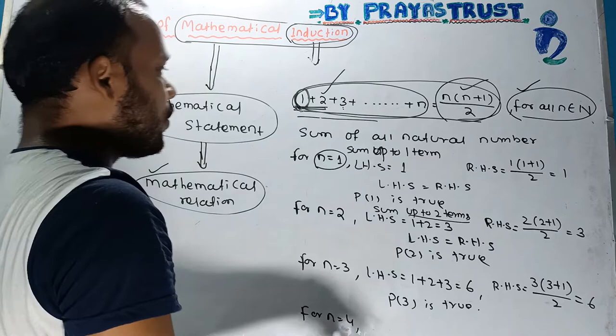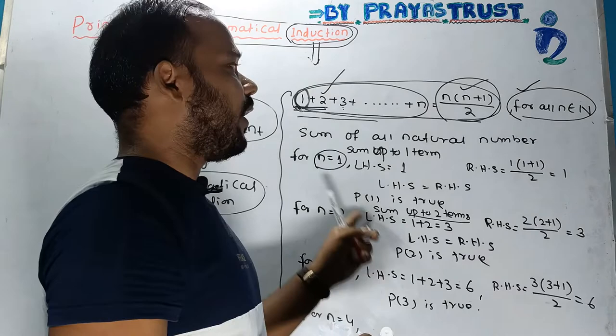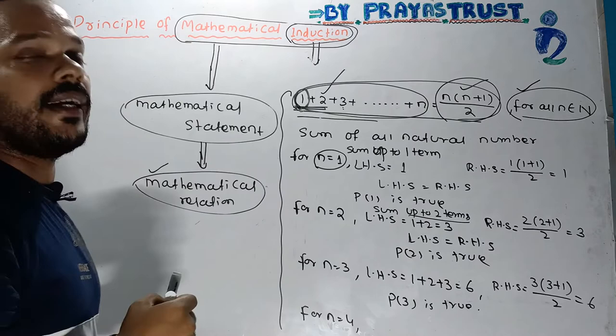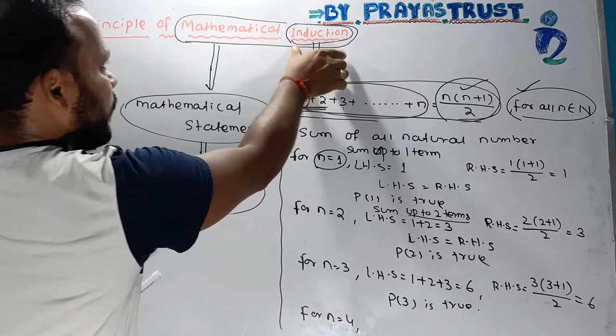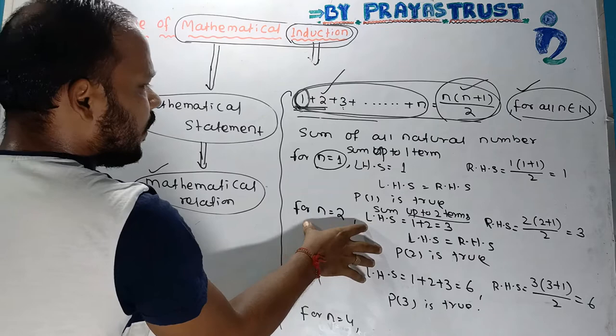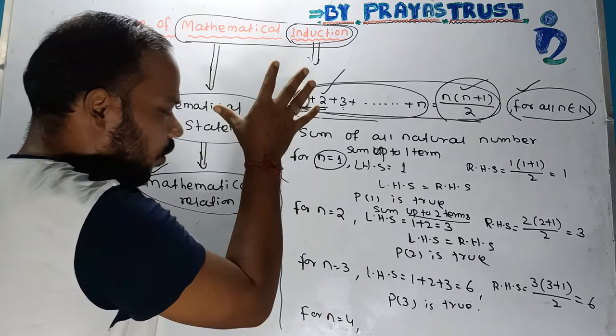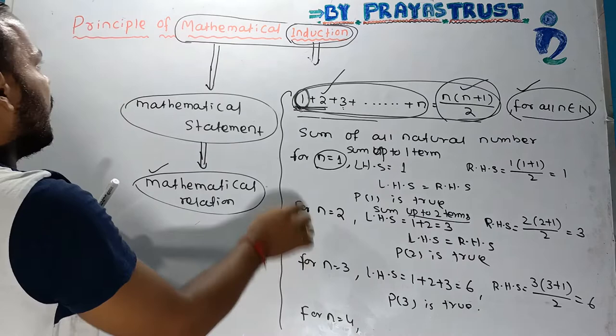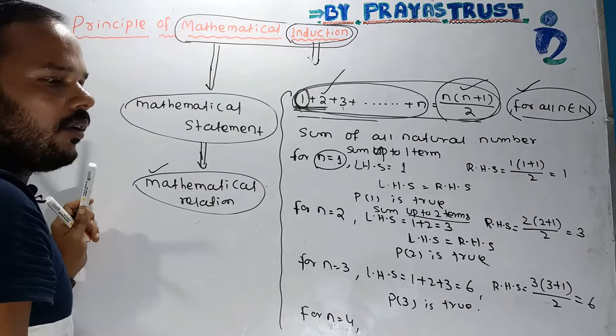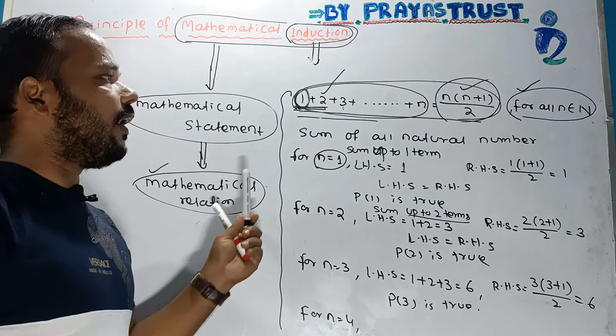Since we cannot put all values of n (because there are infinitely many natural numbers), we derive a technique called the Principle of Mathematical Induction to handle this in an easier and general way.